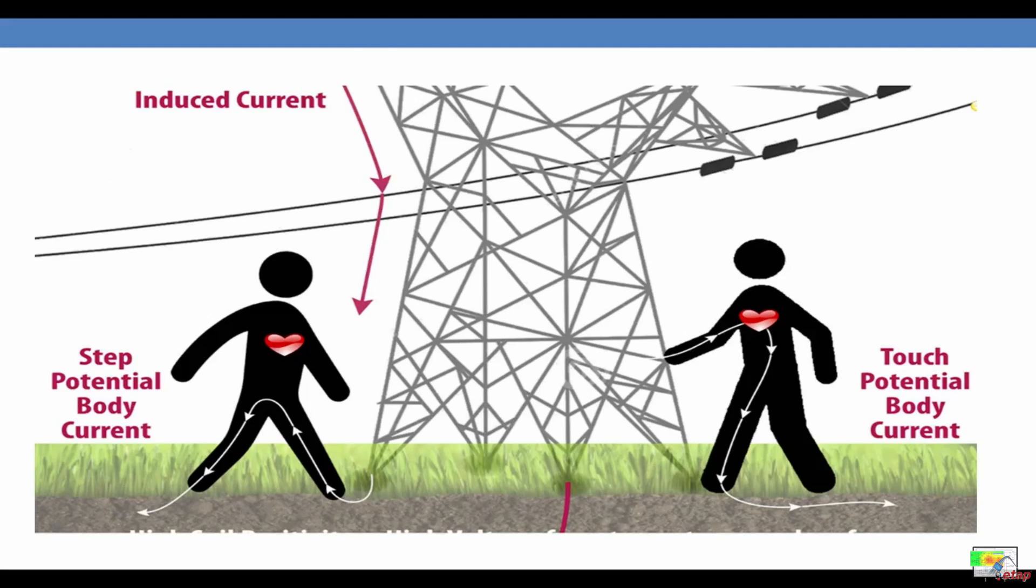Let me show this graphically. The transmission tower will have induced currents flowing through it. On the right side we have a person touching the transmission line. This is the touch potential, from here to here - the point from he is touching with his hand and to his feet at the ground. The voltage between these two points is called the touch potential.